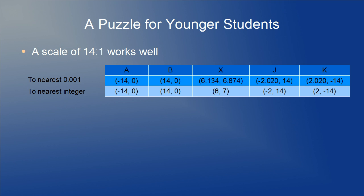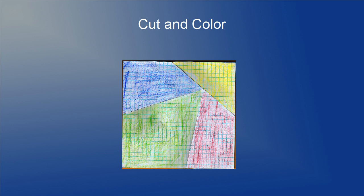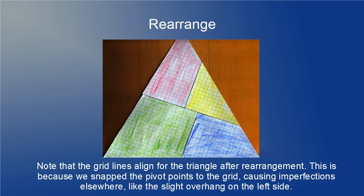Now here's what it looked like when I cut it out and colored it, and upon rearrangement I was surprised to see that the grid lines align for each piece. This is because we snapped the pivot points to the grid, and the pivot point at k is not actually on the grid, so the lines should be offset a bit. We've got a little bit of imperfection with the overhang on the left, as you can see, but nothing too extreme.